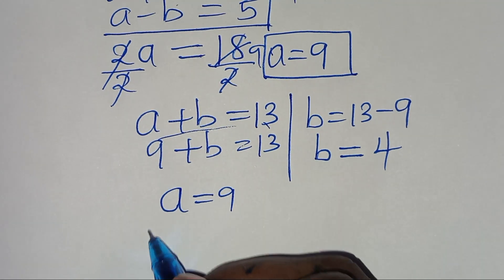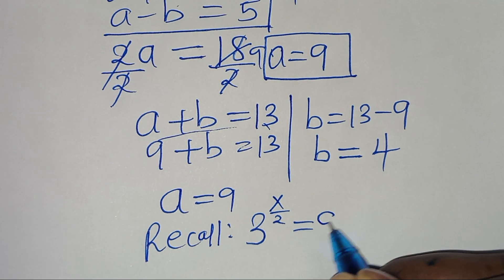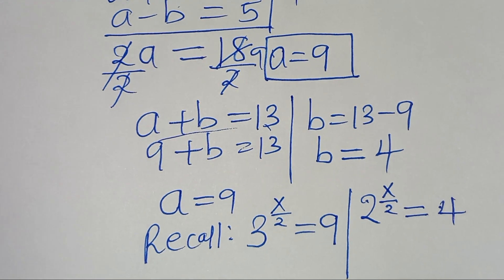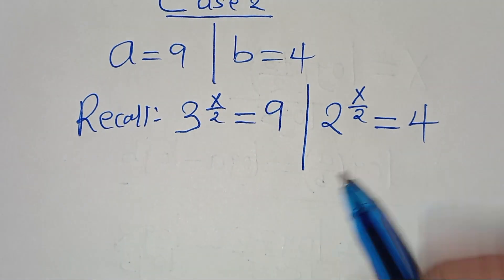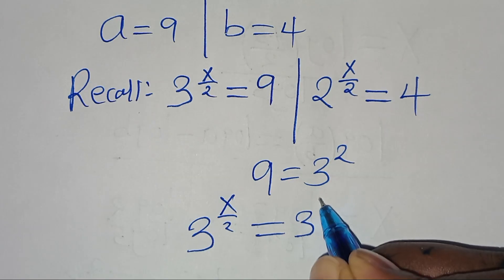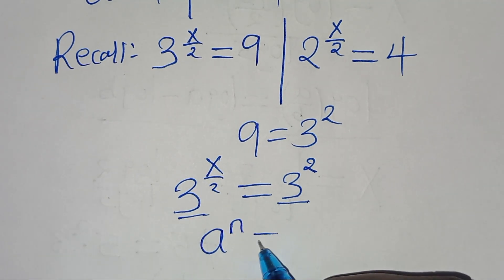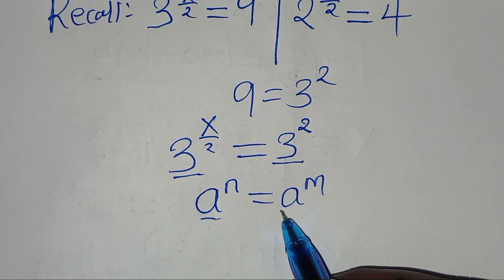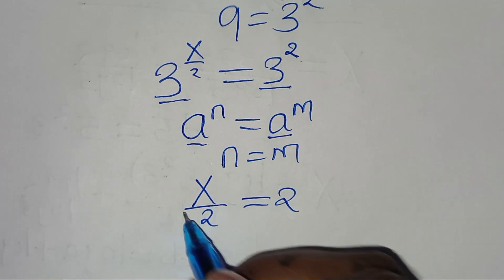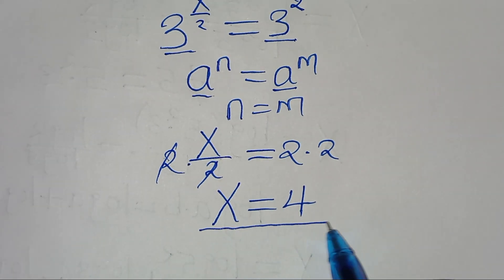Now we solve for x. Recalling that 3 to the power of x over 2 equals a equals 9, we can express 9 as 3 to the power of 2. So 3 to the power of x over 2 equals 3 to the power of 2. Since the bases are the same, the exponents are equal: x over 2 equals 2. Multiplying both sides by 2, the value of x equals 4.